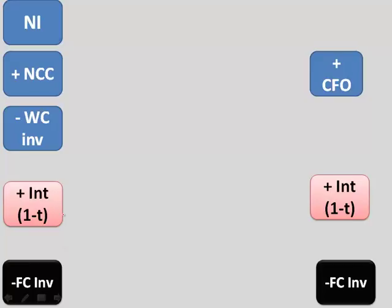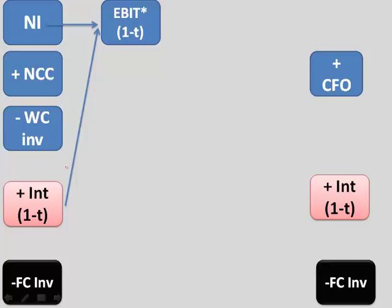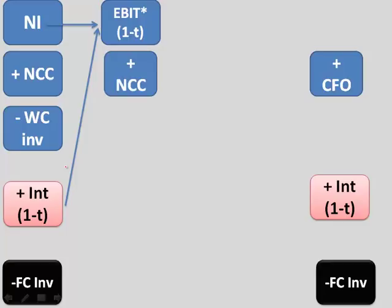So we will say EBIT into 1 minus T. And once you say EBIT into 1 minus T, this number is same as the total of net income and interest. So this number takes care of these two items. So this is taken care of. So we simply plot the remaining numbers. And then you have your next formula where it starts from EBIT.